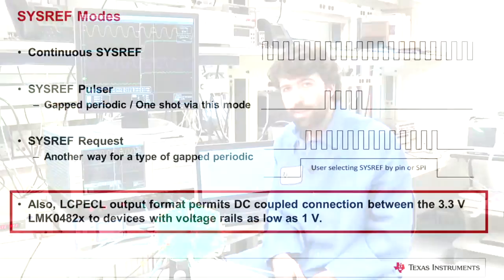Finally, when coupling the sysref to your logic devices or converters, you may choose to use DC coupling. To support this we provide the LC-PECL output mode. LC-PECL allows you to use a resistive divider to achieve low common mode voltages required by these fine geometry parts with low voltage rails. So a voltage rail of one volt is no problem for us. We can achieve a common mode voltage of about 0.5 volts.